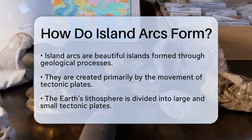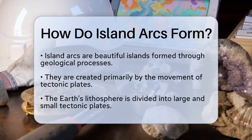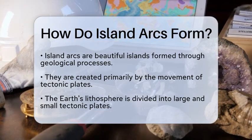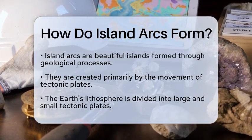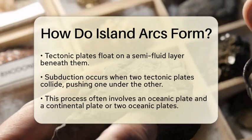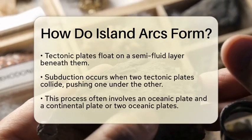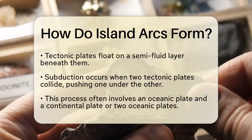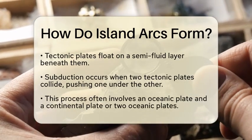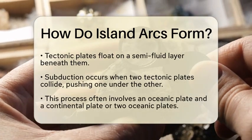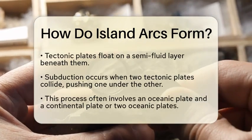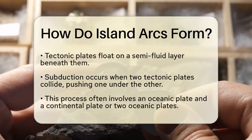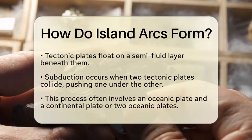Island arcs form primarily through the movement of tectonic plates. The Earth's outer shell, called the lithosphere, is divided into several large and small plates that float on the semi-fluid layer beneath them. When two tectonic plates collide, one plate often gets pushed under the other in a process known as subduction. This typically occurs between an oceanic plate and a continental plate, or between two oceanic plates.